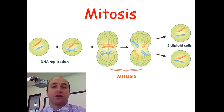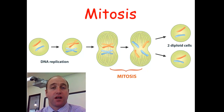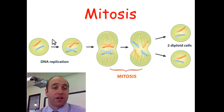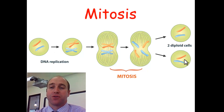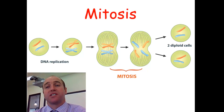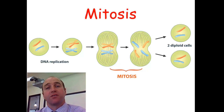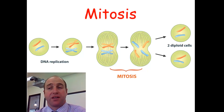Today we're going to have a quick look at mitosis. Mitosis is really the process of cell division — how a cell might go from having one cell to having two cells. All organisms need to do this for growth, but also for repair of damaged cells.